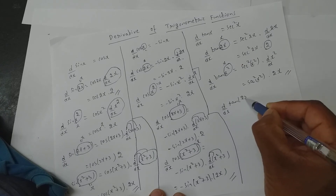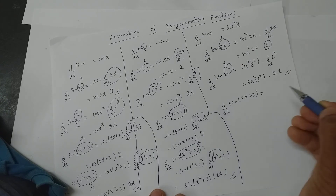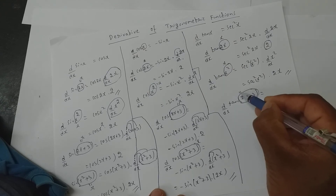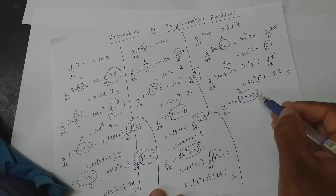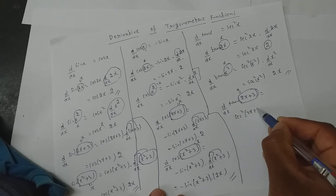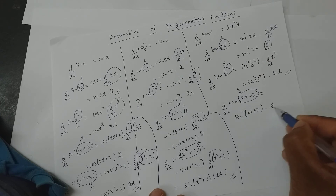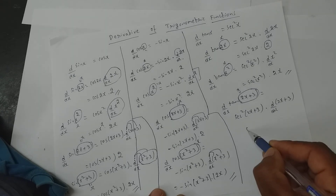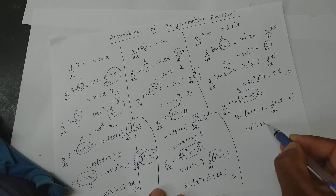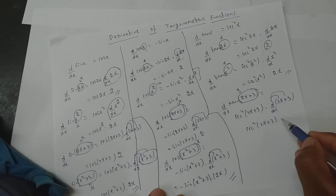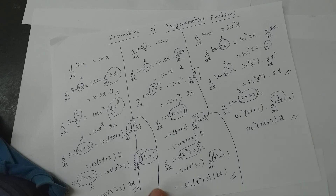d/dx of tan of 2x plus 3 — again you will assume this entire part to be x. Tan x derivative is secant square, so it becomes secant square of 2x plus 3, into d/dx of your assumed x. So it is secant square of 2x plus 3 into: when applied on 2x I get 2. This is the answer.